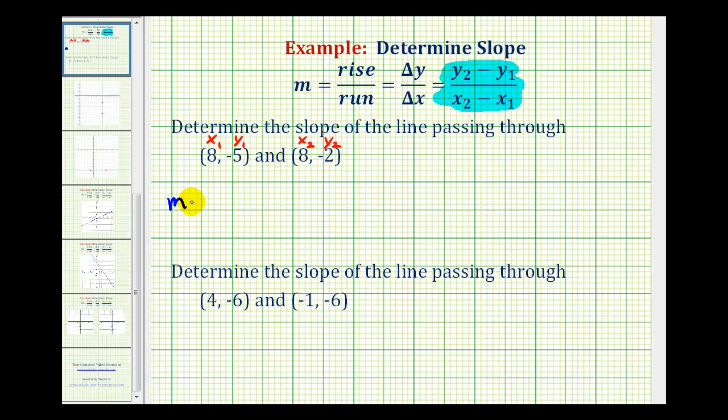We have m equals y₂ minus y₁, that would be -2 minus -5, all over x₂ minus x₁, that would be 8 minus 8. So here -2 minus -5 becomes -2 plus 5, and we have 8 minus 8. Well, this would be 3 over 0, or 3 divided by 0. Division by zero is undefined, so the slope of this line is undefined.